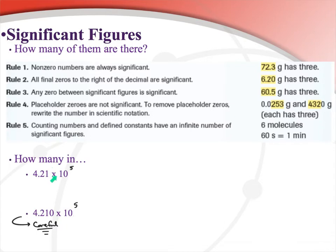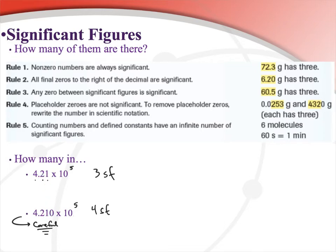If we get a number written in scientific notation, counting significant figures is actually very easy — all you have to do is count how many digits are in the coefficient. So 4.21 × 10⁵ has three significant figures — just the 4, the 2, and the 1. And 4.210 × 10⁵ has four significant figures — count one, two, three, four digits in the coefficient. Super easy.